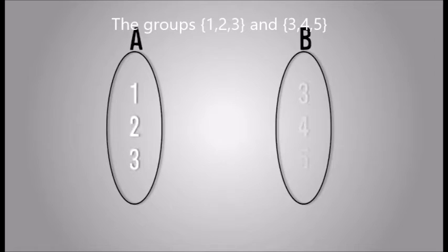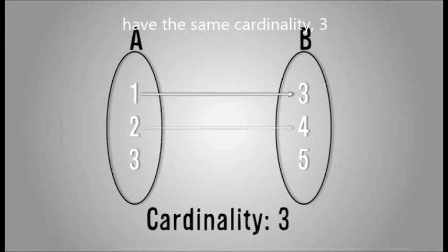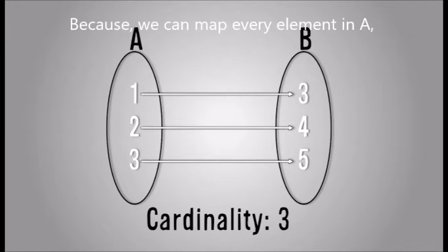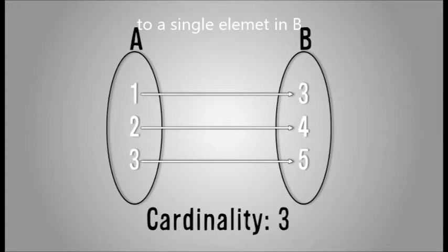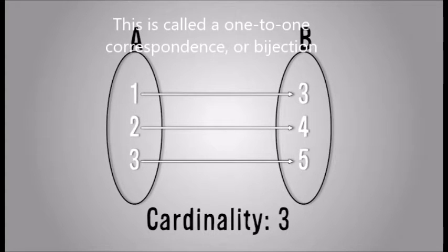The groups 1, 2, 3, and 3, 4, 5 have the same cardinality, 3, because we can map every element in A to a single element in B. This is called a 1 to 1 correspondence or bijection.